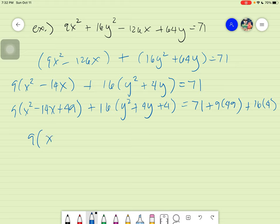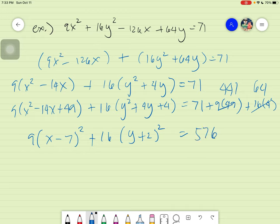So in this case, it's 9 times x minus 7 squared. So what happened there is I got the square root of 49, and that is 7, and I got the sign in the middle. Plus 16y plus 2 squared equals to, you just have to evaluate this one, it's actually quite easy. So it's just going to be 49 times 9, and you have 16 times 4. So 49 times 9 is just simply 441, and 16 times 4 is just simply 64. And add them all up, 64 plus 441, plus 71, the answer is 576.